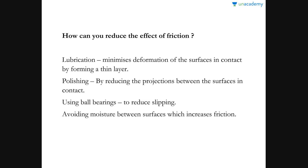How do we reduce friction? First, lubrication minimizes deformation of surfaces in contact by forming a thin layer, increasing the effective surface area and reducing friction. Second, polishing reduces the projections between surfaces in contact, thereby reducing friction. Third, ball bearings — used in gears — reduce slipping, which is the condition of relative motion. Finally, we should avoid moisture between surfaces, as moisture increases friction.